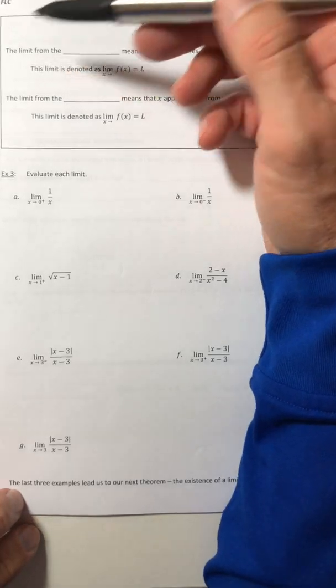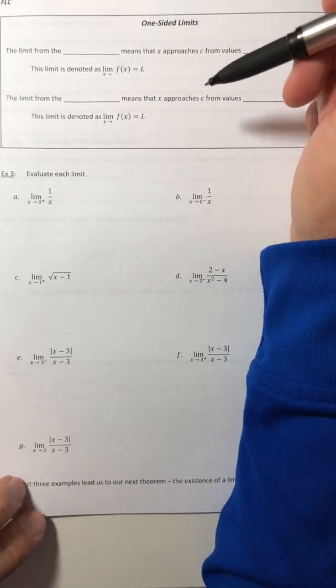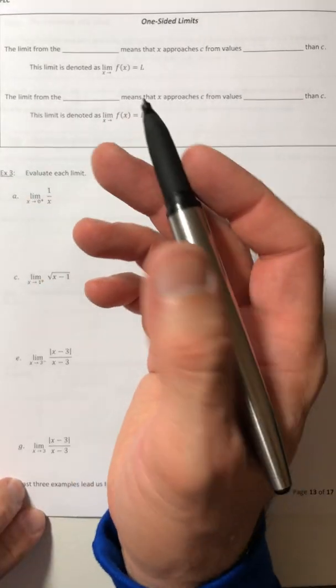The limits that we've been looking at before this have been two-sided. It was a right and left together. So now we're going to distinguish from which side is which.